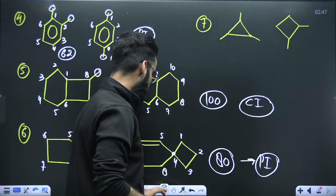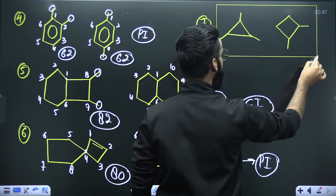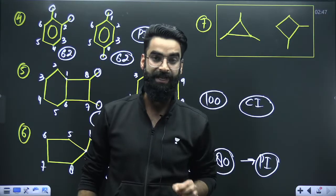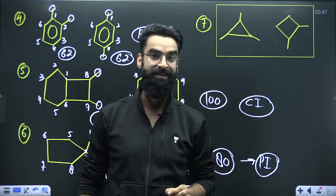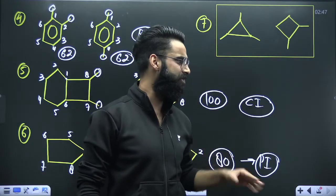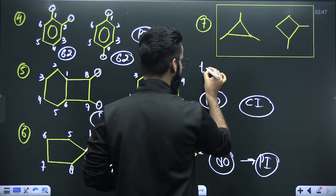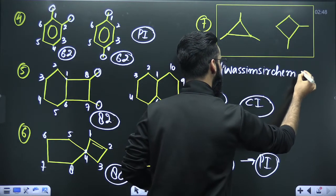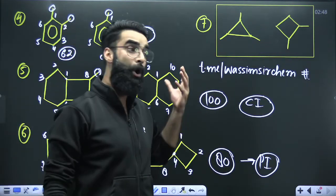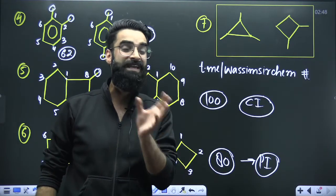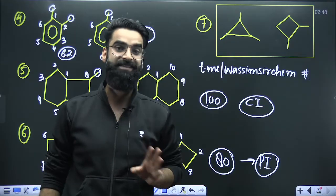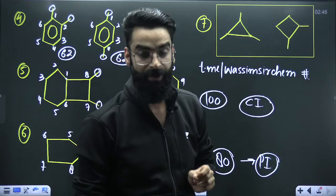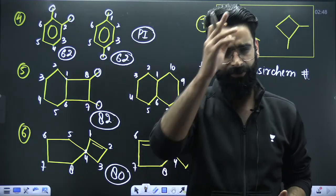As homework, I'm giving you one question already mentioned on screen — let me know in the comments whether those two isomers are chain isomers or positional isomers. To get PDFs of all sessions and tricks, join my Telegram channel at t.me/wassimsirchem. Do join so you stay notified about all these short trick videos. I hope you liked this session — if you haven't subscribed yet, please subscribe right now. Take care, God bless you all, see you in the next video. Bye-bye.